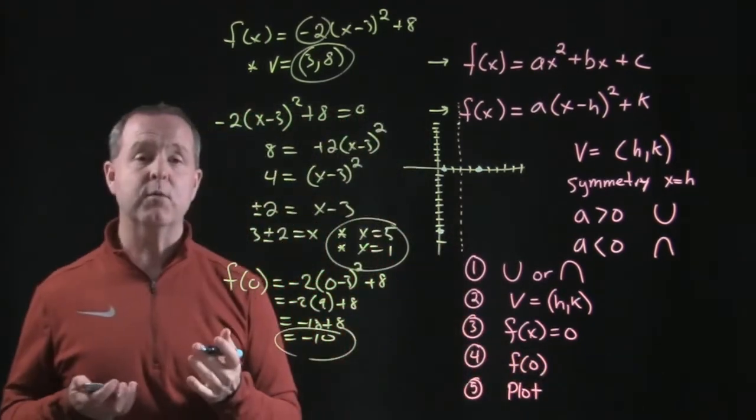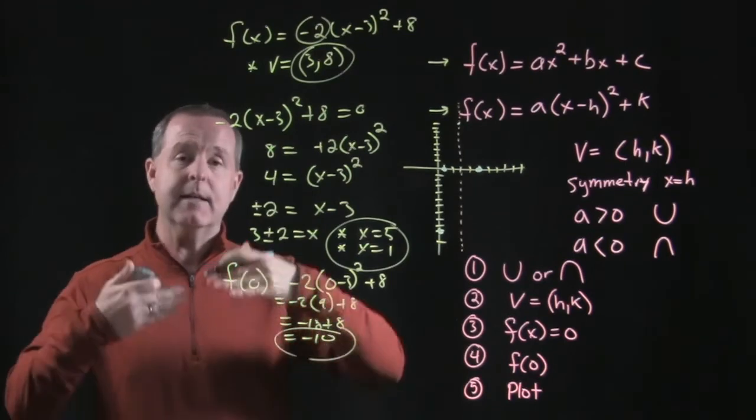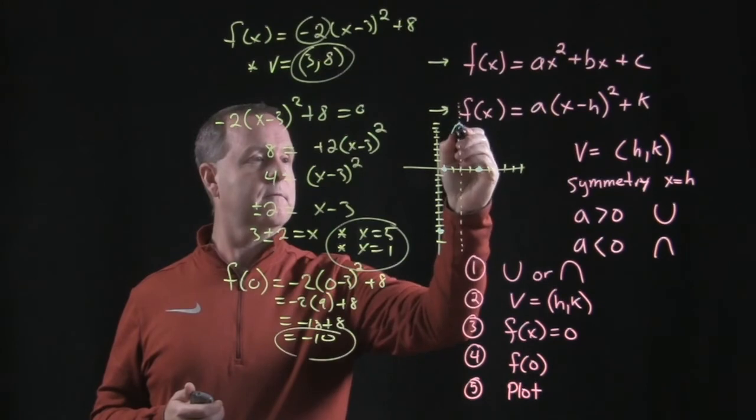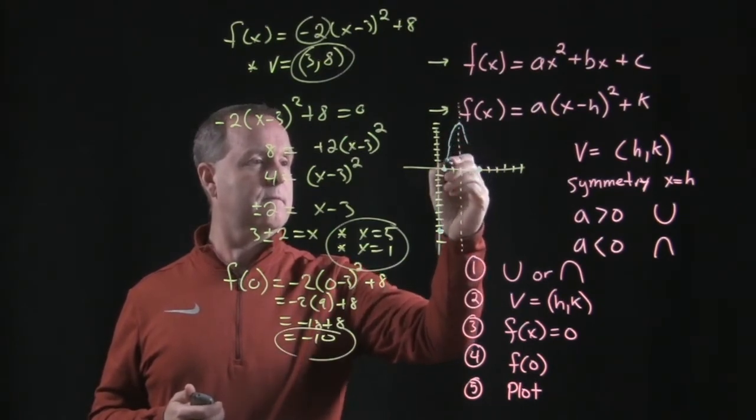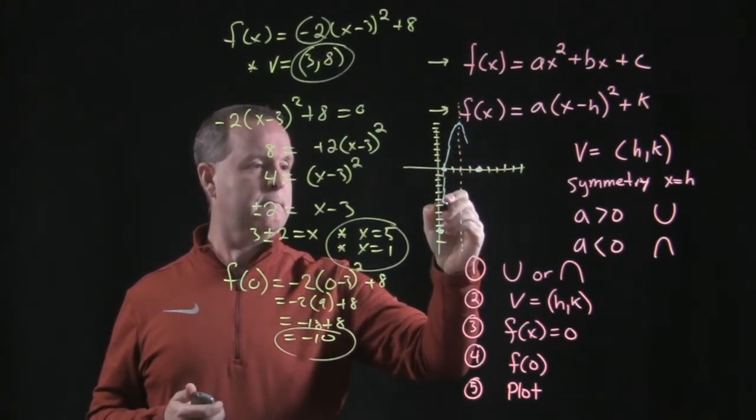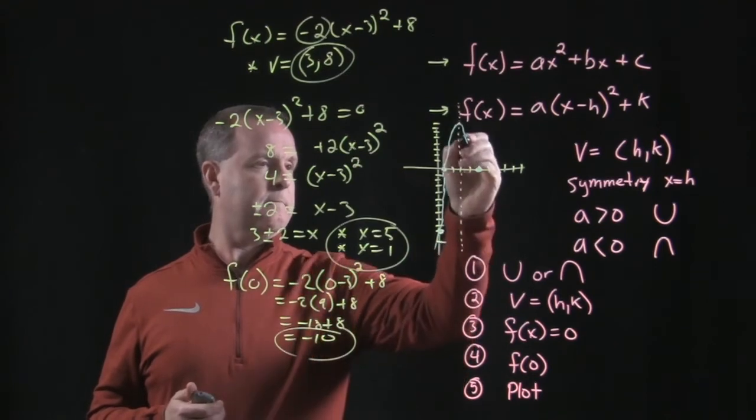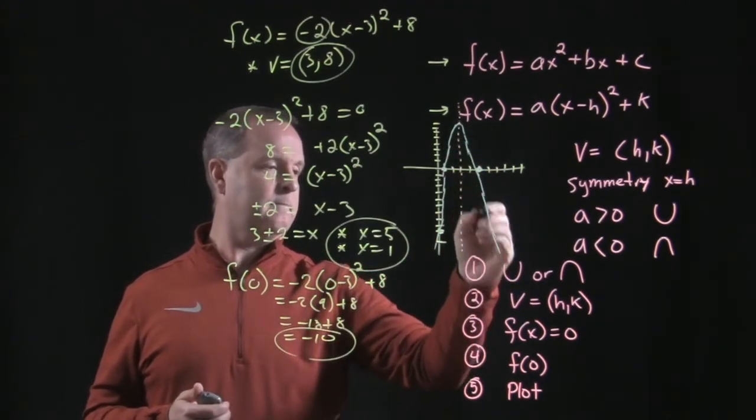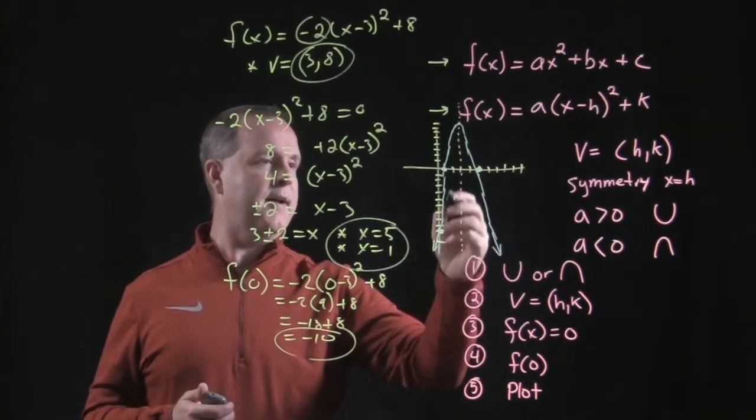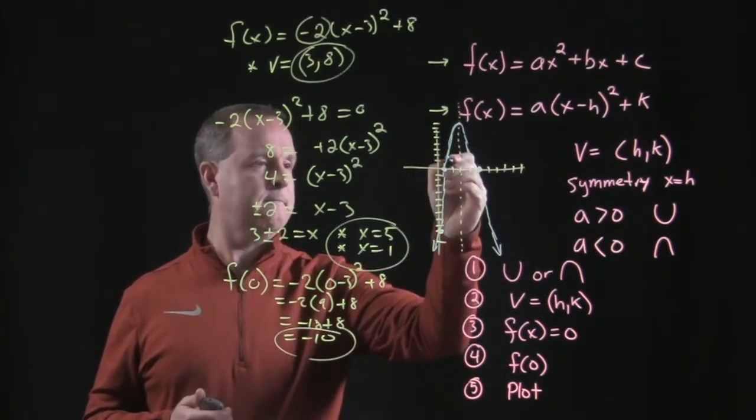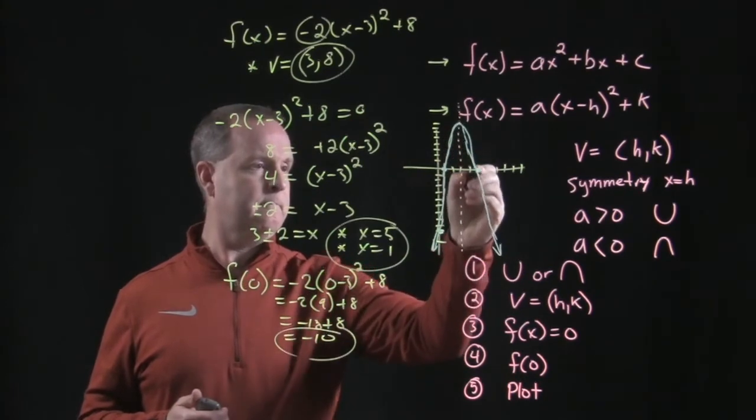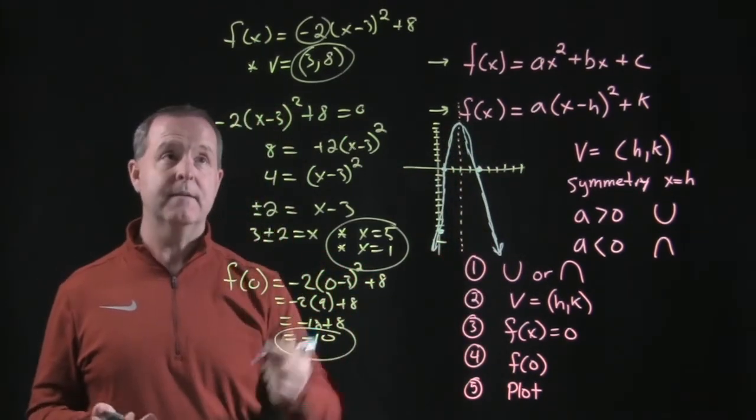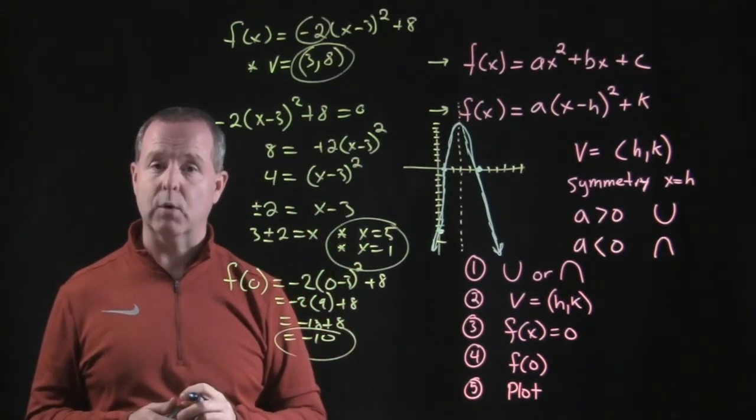And what we do from there is we just do our best to draw a nice smooth graph that follows through all those points. And if I can just kind of smooth that out, there is a graph of this particular quadratic equation.